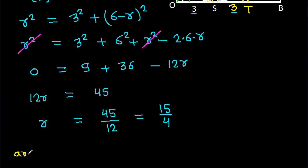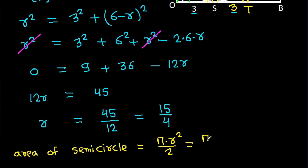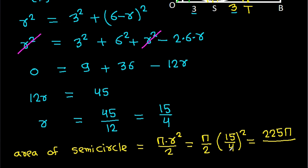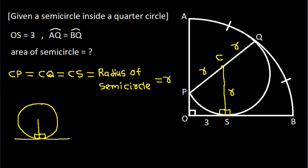Now, the area of the semicircle is π × R² / 2 = (π/2) × (15/4)² = (π/2) × (225/16) = 225π/32.